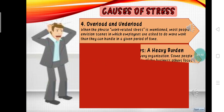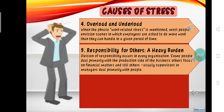The fifth cause of stress is responsibility for others — a heavy burden. Division of responsibility occurs in every organization. Some people deal primarily with the production side of the business, such as obtaining supplies and maintaining equipment. Others focus mainly on financial matters, such as budgets, taxes, and accounting. And still others, usually supervisors or managers, deal primarily with people. Do the levels of stress associated with these contrasting roles differ? Research suggests that they do.